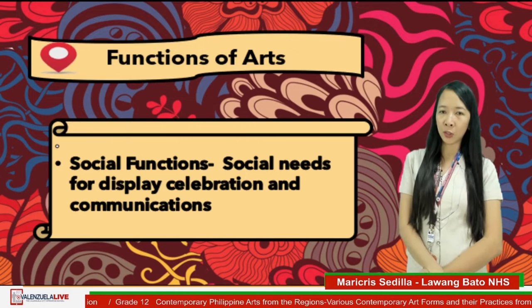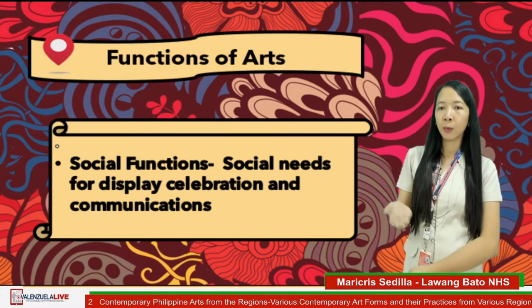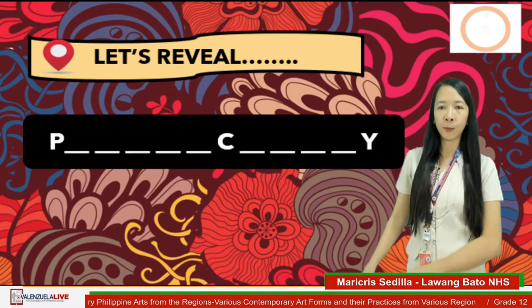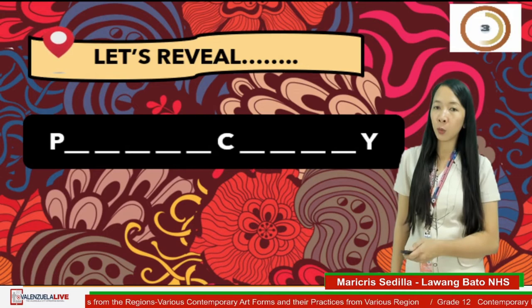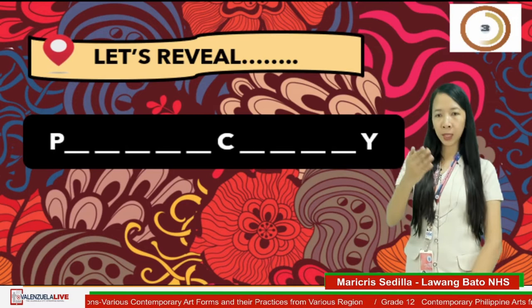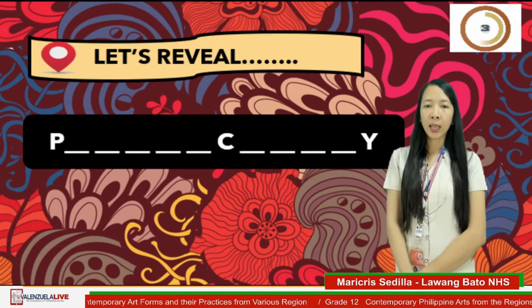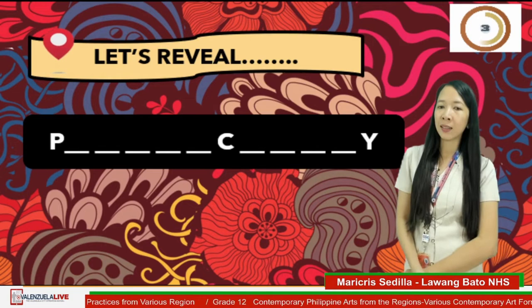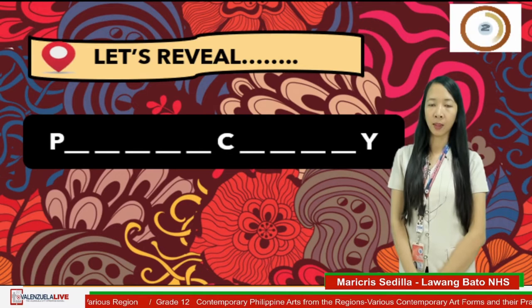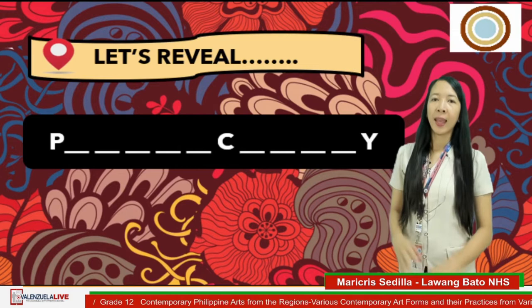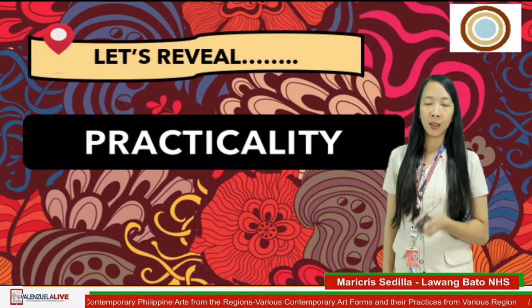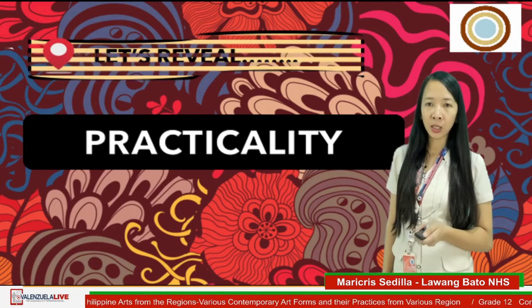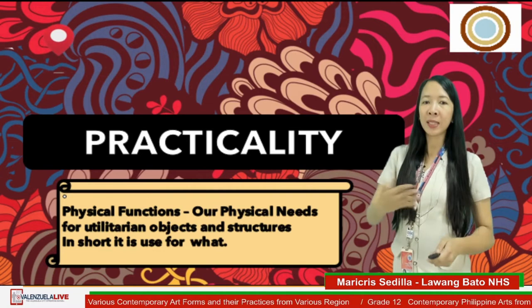Let us have another game to guess the third function of art. The clues: it is one word, the first letter is consonant P, the last letter is Y, the second letter is R, and the seventh letter is C. The answer is for practicality. The third function of art is for physical function, which means for everyday use — addressing physical needs for utilitarian objects and structures.